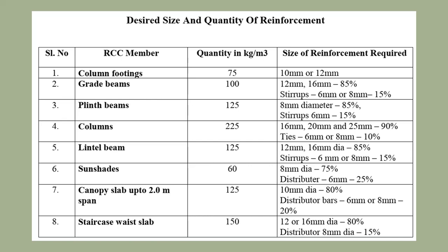These quantities are as per thumb rule. For RCC column footing, the quantity required is 75 kg per cubic meter, using 10 mm and 12 mm bars. For grid beam, it is 100 kg per cubic meter, with 12 mm bars at 85% and 16 mm bars at 15%, and stirrups of 6 mm or 8 mm. For plinth beam, it is 125 kg per cubic meter with 8 mm diameter bars and 6 mm stirrups.